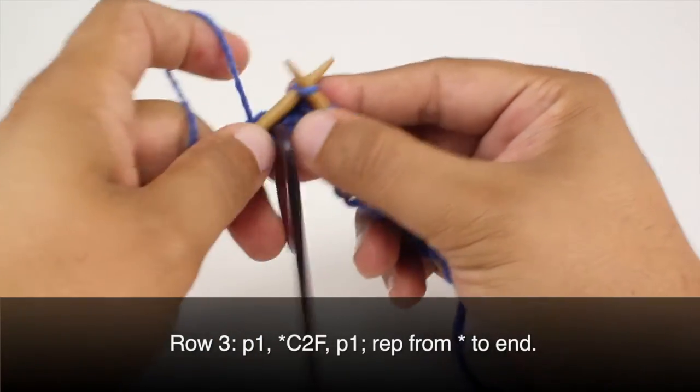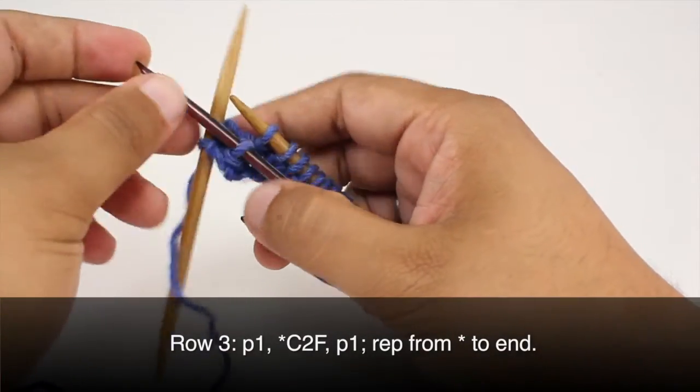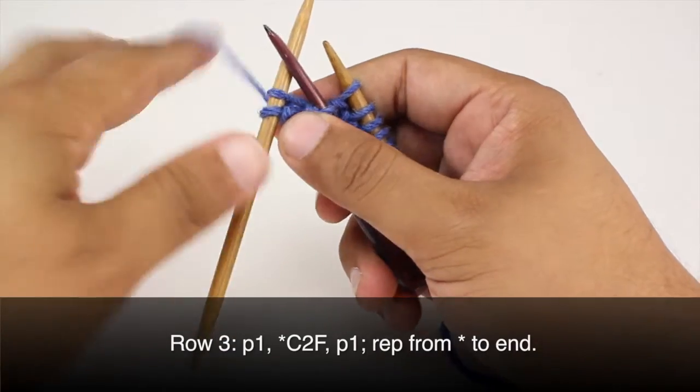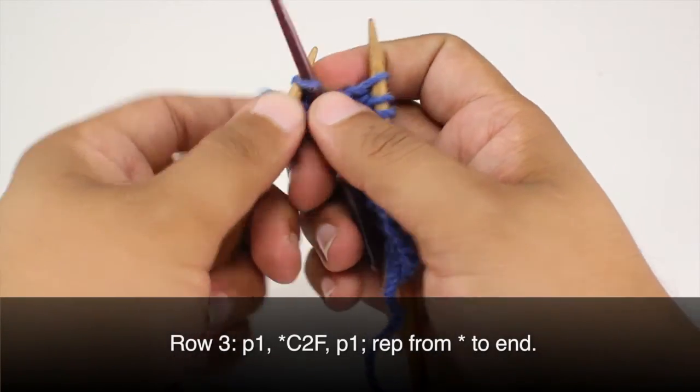Then we'll knit the next stitch. And then we are going to knit the stitch from our cable needle. Okay so this is a cable 2 forward.